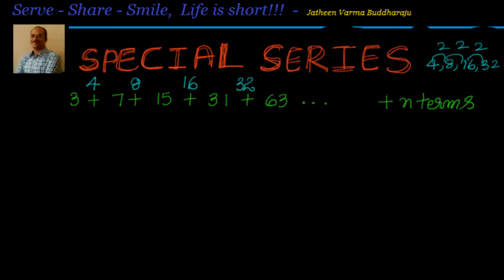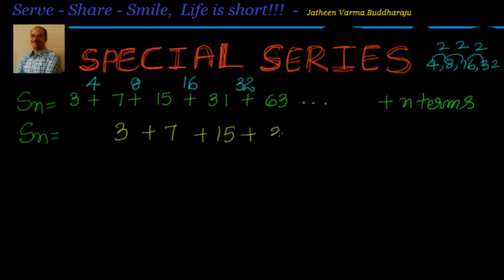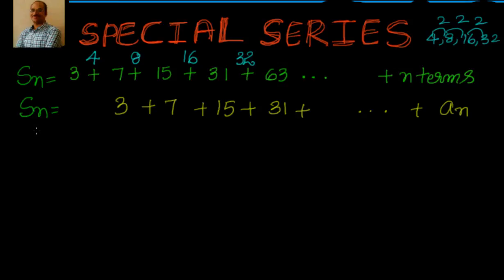Between 3 and 7 the difference is 4, between 7 and 15 it is 8, between 15 and 31 it is 16, and between 31 and 63 it is 32. So the differences — 4, 8, 16, 32 — are in geometric progression with common ratio 2.